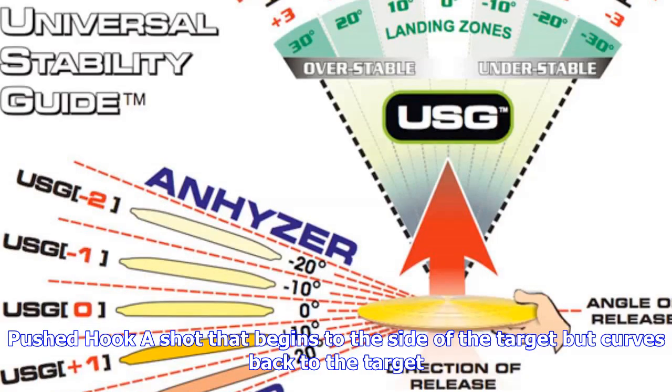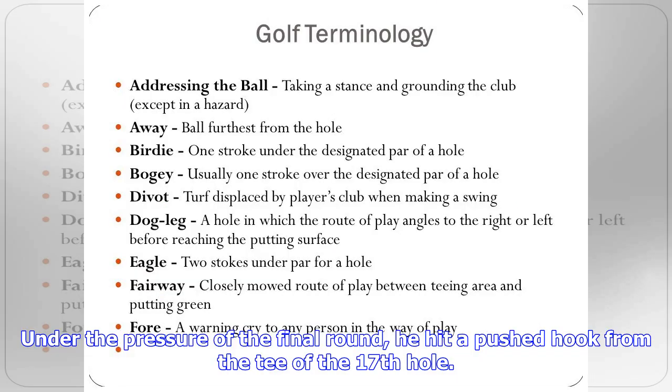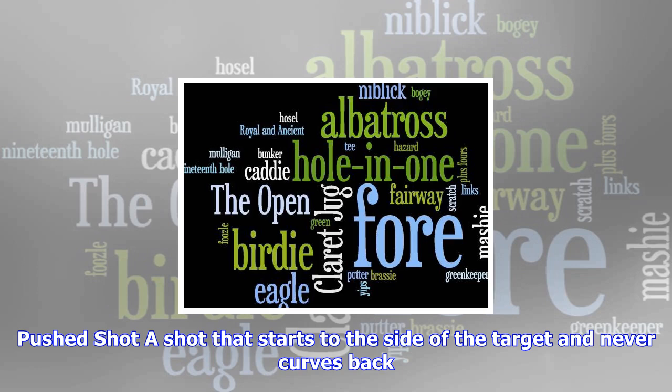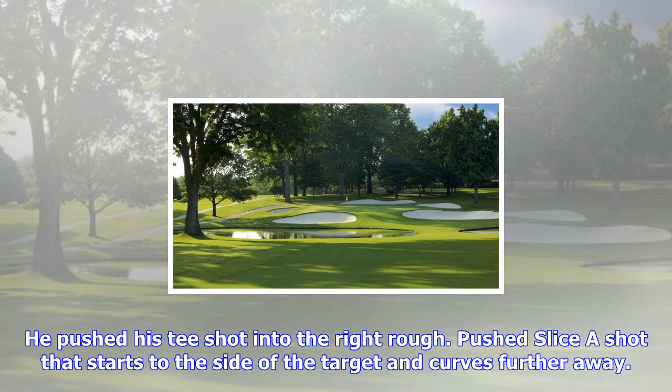One piece takeaway: sometimes called the modern takeaway, it describes the beginning of the backswing when the hands, arms and wrists move away from the ball, maintaining the same relationship they had at address. Sam Snead is credited with developing the one-piece takeaway.